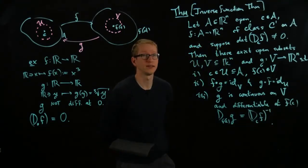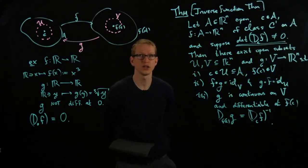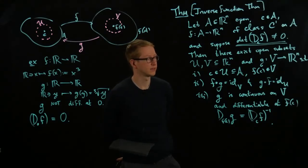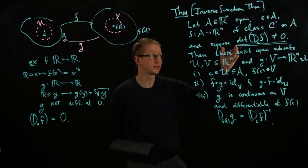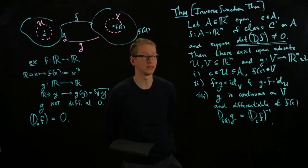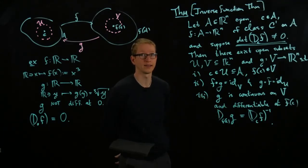So it's quite amazing that this assumption here, the fact that all we assume is the determinant does not vanish at one point, implies that not only can we construct an inverse, which means in particular, f is one-to-one on some open neighborhood around c, we can construct an inverse and that inverse is also differentiable at that point.